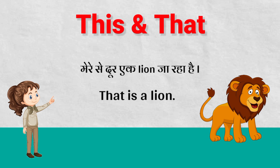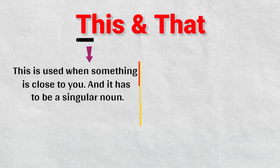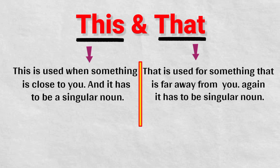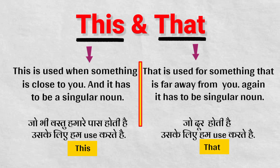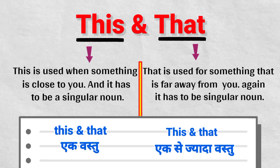I hope you have understood. 'This' is used when something is close to you, and it has to be a singular noun. And 'that' is used for something that is far away from you — again, it has to be a singular noun. Jo bhi vastu humare paas hoti hai, ham us ke liye use karte hai 'this'. Aur jo door hoti hai, us ke liye use karte hai 'that'. Aur hamisha yaad rakhna hai ki 'this' or 'that' hamisha ek vastu ke liye, ek chiz ke liye use hota hai. Ek se zyada hongi to ham 'this' or 'that' use nahi karte.